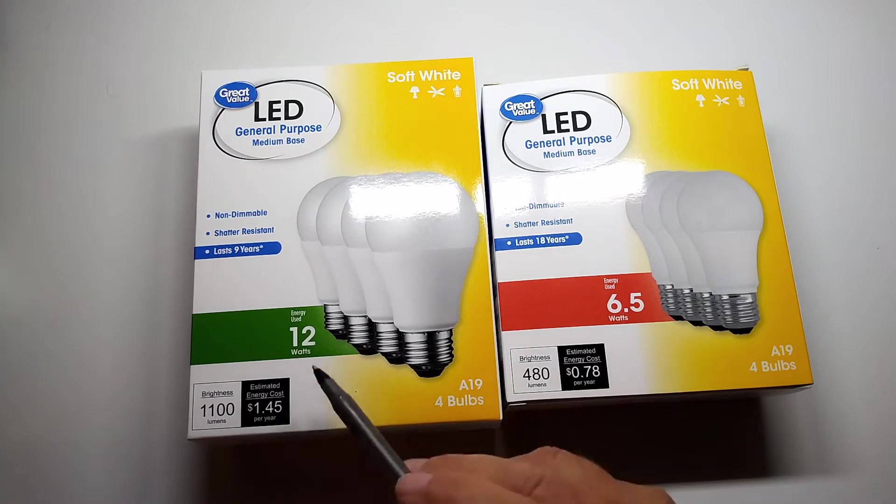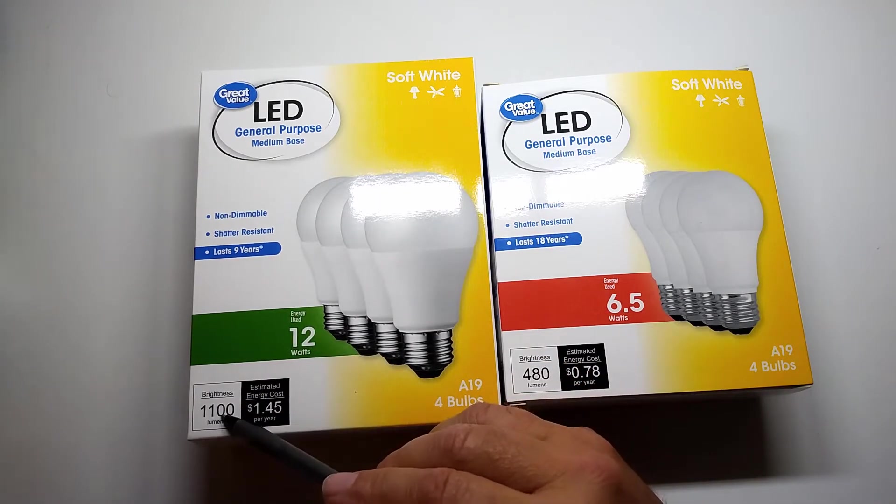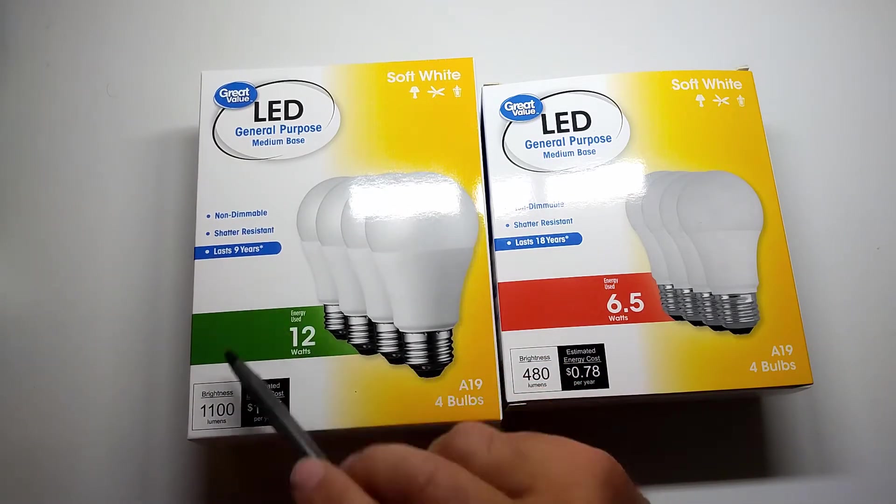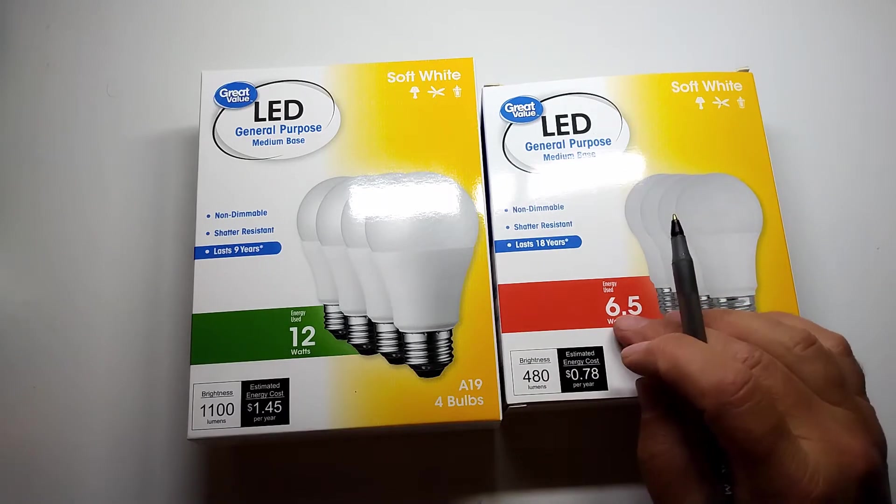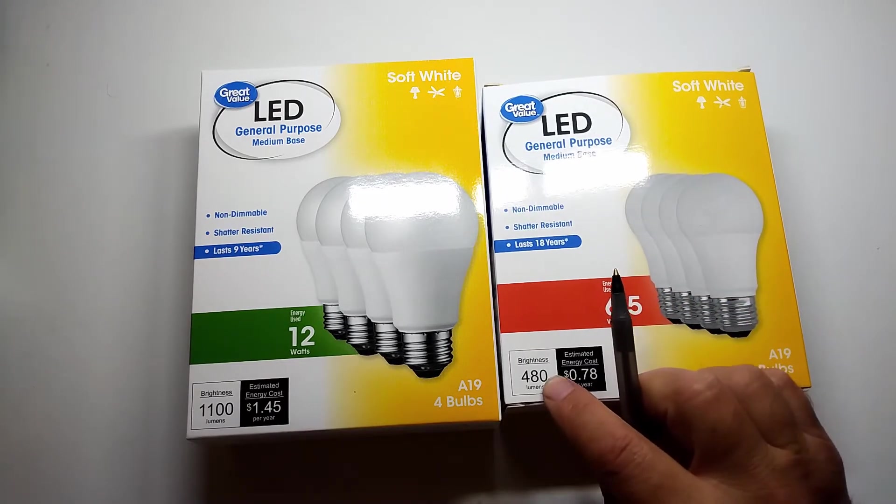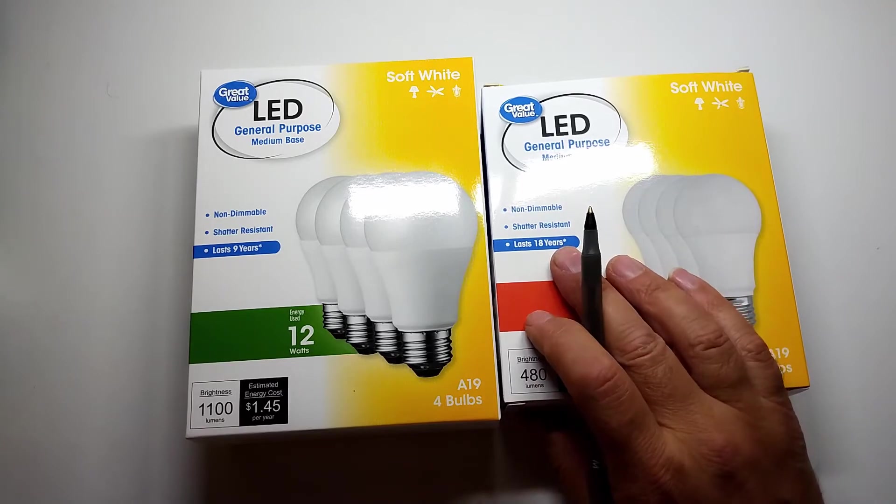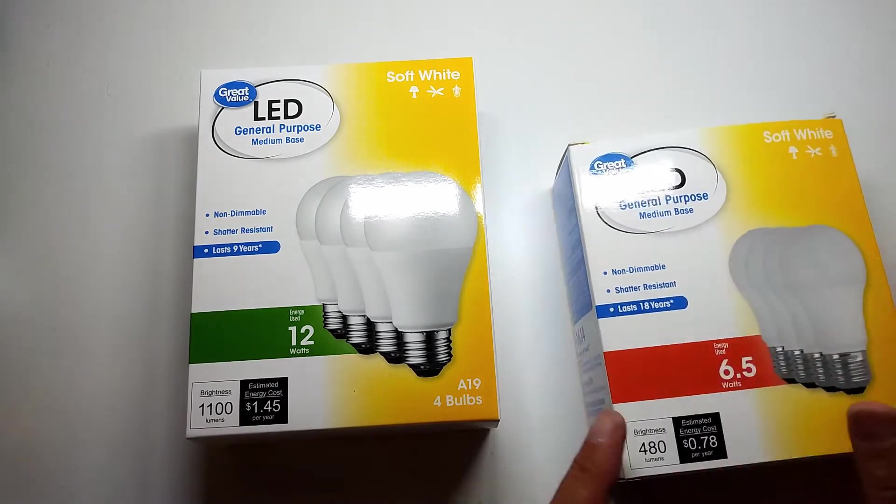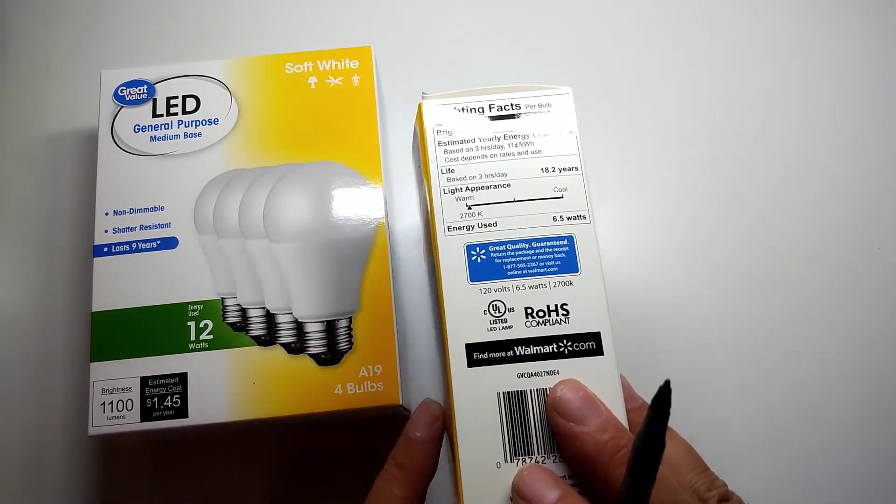A 12-watt, 1100 lumens bulb that has a nine-year life, and a six and a half watt bulb with 480 lumens with an 18-year life. Speaking of life, it's kind of interesting to look.